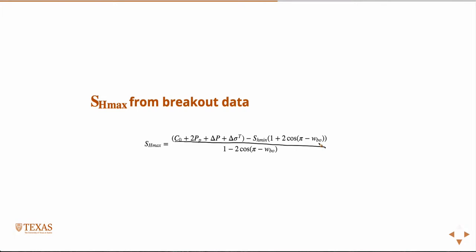So, if we get SH min, then we have observations of breakouts. In this case, those observations come in the form of a breakout width. Say we had some televiewer data or some caliper data, and we could get an estimation of the breakout width in a rock. And then we knew what SH min was from DFIT,